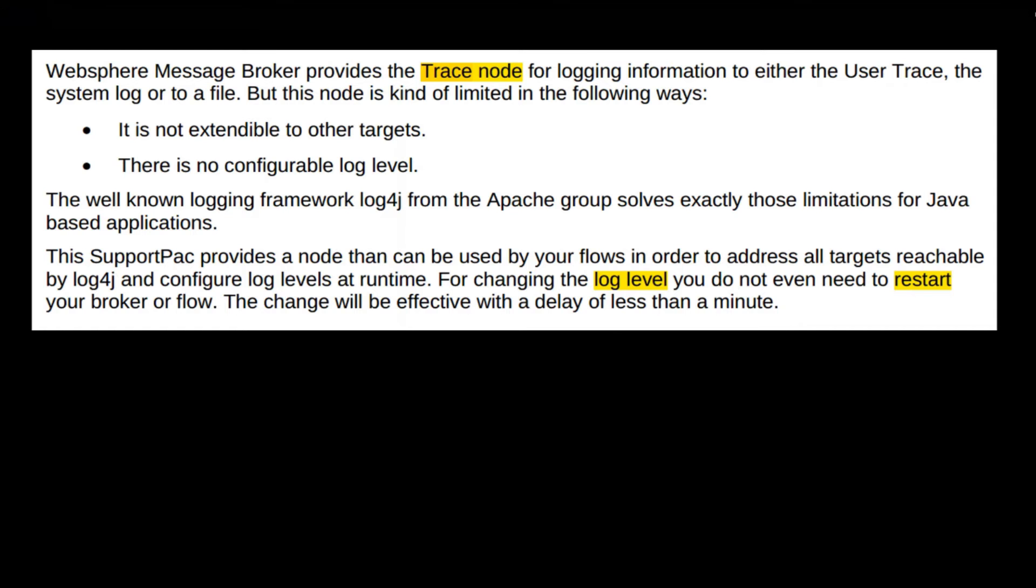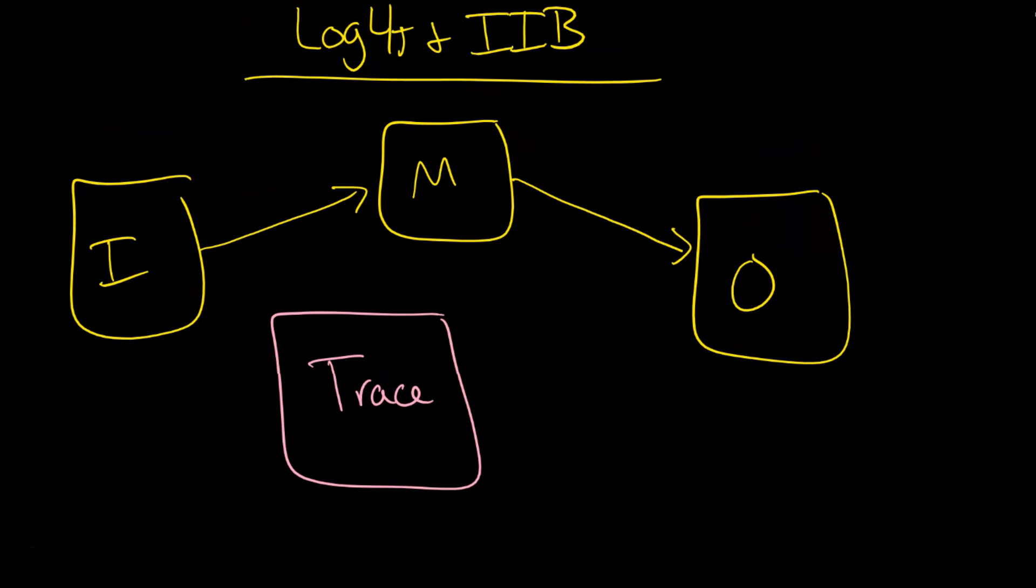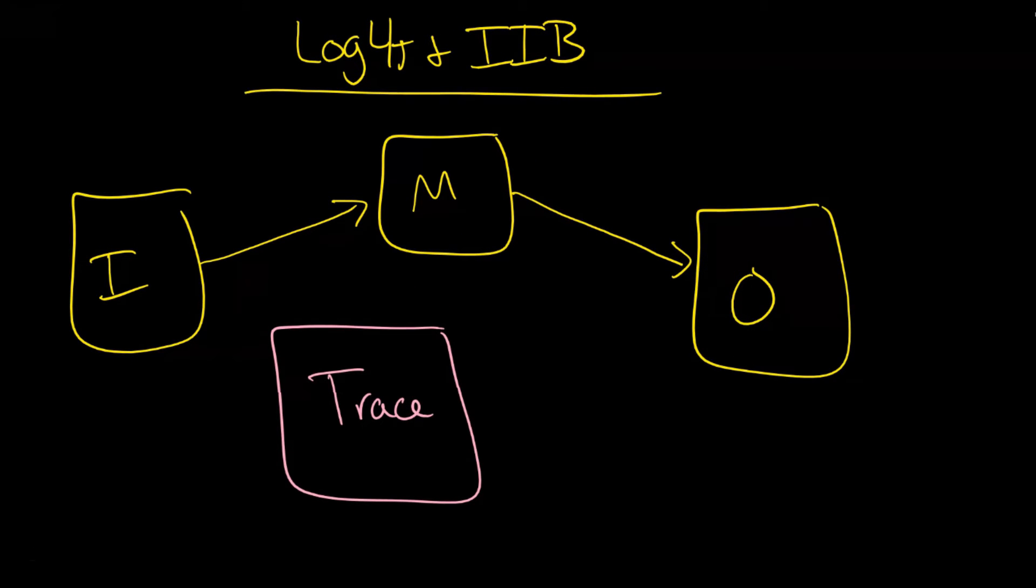But there are two problems with the trace node itself. First of all, it's not extendable to other targets. So what does that mean? Well, it means that if this is your trace node here, obviously what you can't do—imagine that this M here is actually an eSQL node, right?